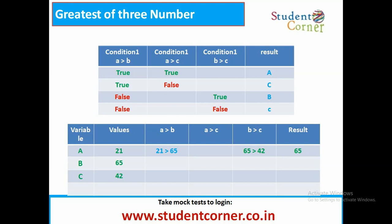If A greater than B is true but A greater than C is false, then obviously C is greatest. If A greater than B is false and B greater than C is true, then B is greatest. If A greater than B is false and B greater than C is also false, then obviously C is greatest.